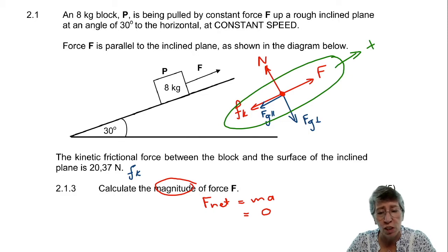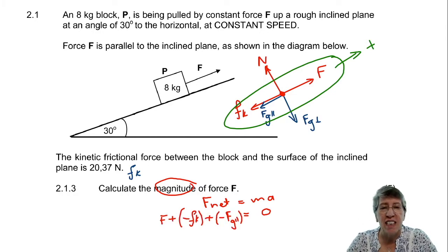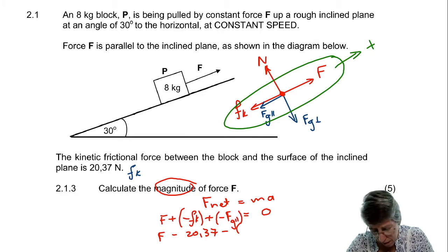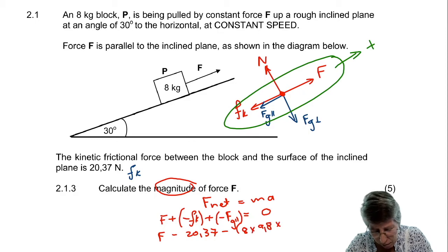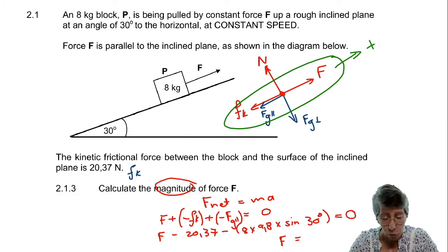F is going to be a force in the positive direction, and gravity and the parallel component are going to be in the negative direction. For gravity parallel, that is going to be 8 times 9.8 — the whole gravity — times sine of the bottom angle, which was 30 degrees. That gave me zero, and then you solve for F. F equals 59.57 newtons.